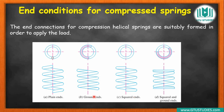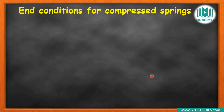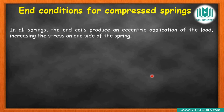Then there is square and ground end — make sure the end shape is square, with the coils ground square. These are square and ground ends. So the spring has different ends — make sure to study these end conditions so the correct spring can be used.